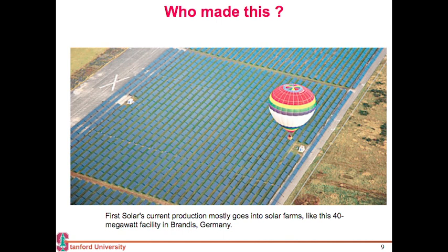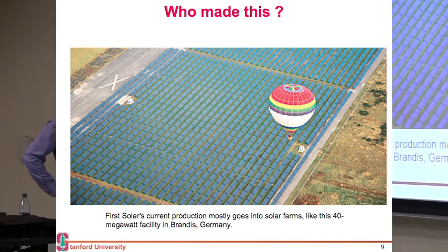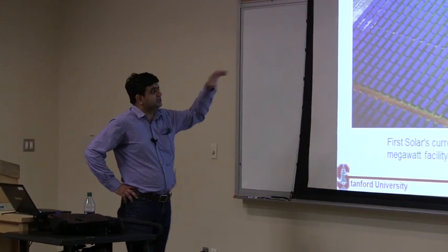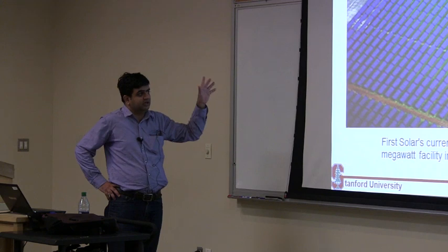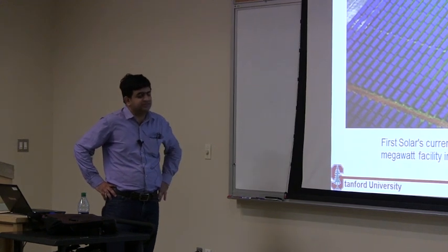This is a big installation of those kind of panels. These are panels made by First Solar, the company which makes cadmium-based thin film solar cells. A lot of utility-based solar farms is where mostly you'll find these cells. These are not as high efficiency as single crystalline, so they're not as prevalent on rooftops, but on the sides of 101 you'll notice a lot of these panels.